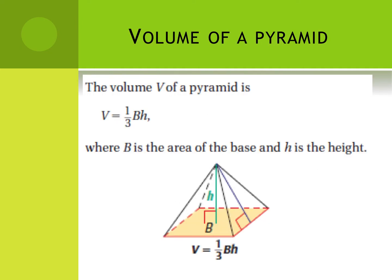Here is the official formula: the volume of a pyramid is one-third capital B times H, where capital B represents the area of the base. Notice the height hits the center of the polygon on the base — that height is also called an altitude.